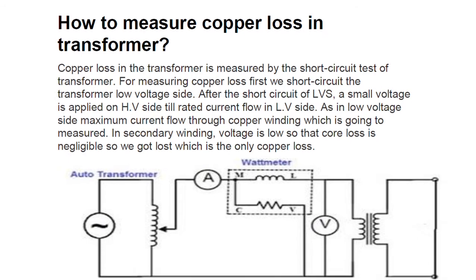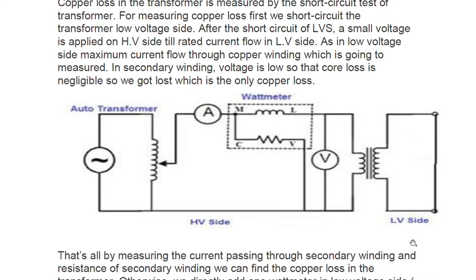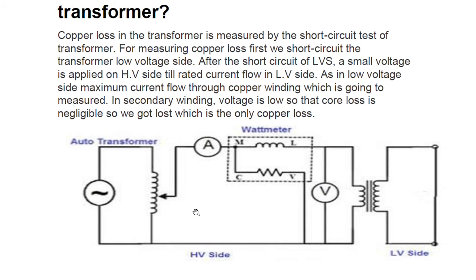Copper loss in the transformer is measured by the short circuit test of the transformer. For measuring copper loss, we first short circuit the transformer's low voltage (LV) side. This is the diagram — this is the LV side (low voltage side) and this is the HV side (high voltage side), where you can vary the voltage. After short circuiting the LV side, a small voltage is applied to the HV side until the rated current flows in the LV side.